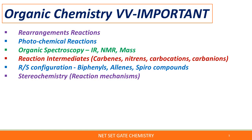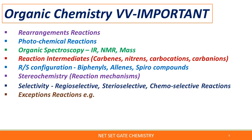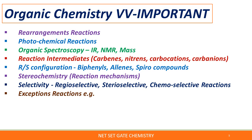In stereochemistry, you have to cover RS configuration, particularly biphenyls, allenes, and spiro compounds. Stereochemistry of reaction mechanisms will be heavily asked in the GATE and CSIR NET exam — focusfully on stereochemistry of photochemical reactions and diastereoselective reactions. Selectivity is also very very important: regioselective, stereoselective, and chemoselectivereactions will definitely be asked in these exams.